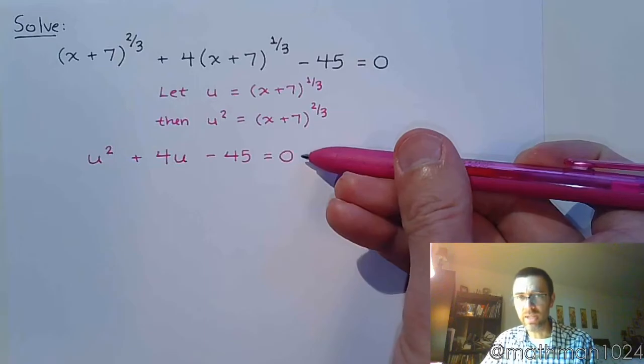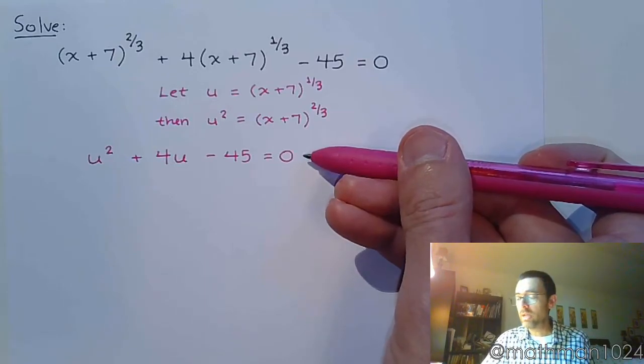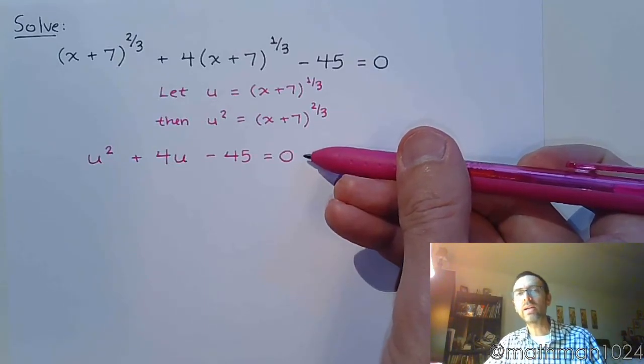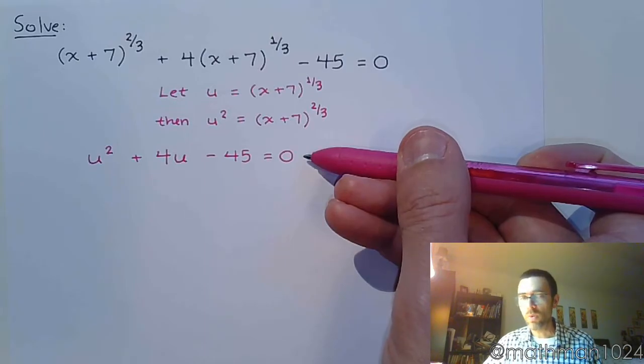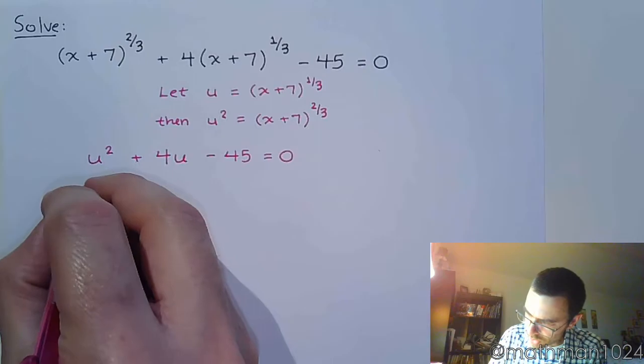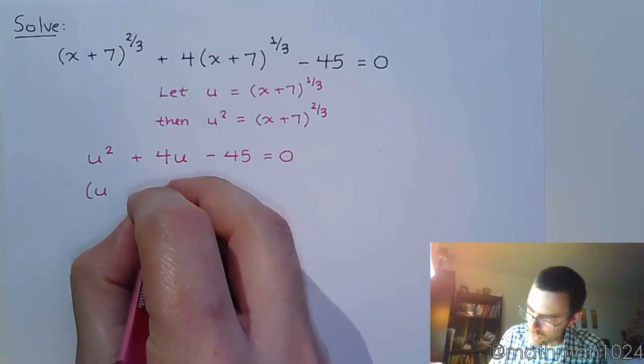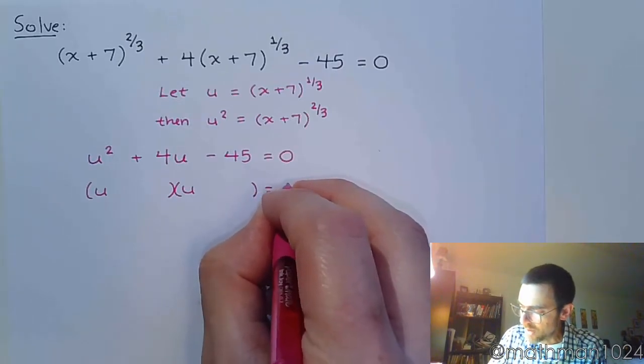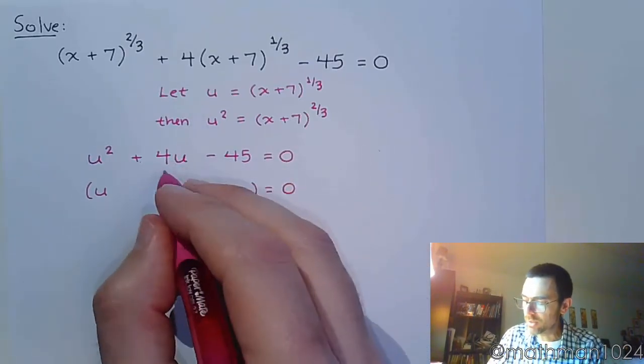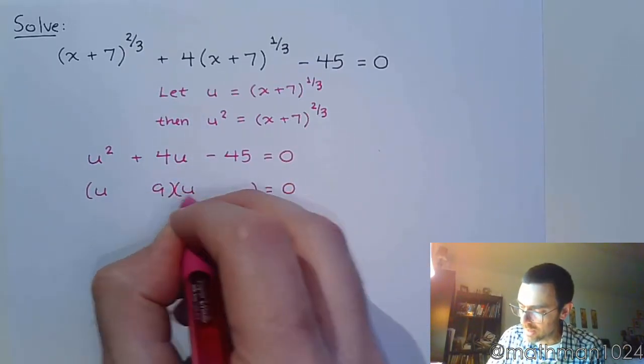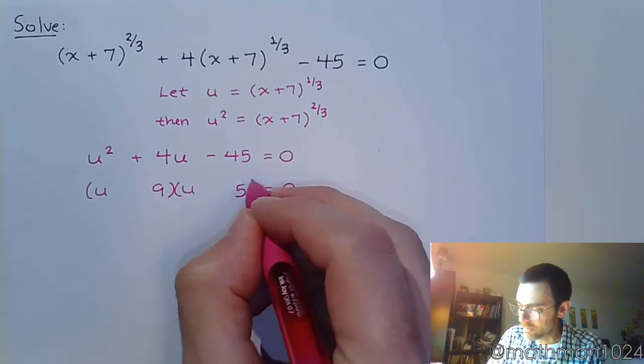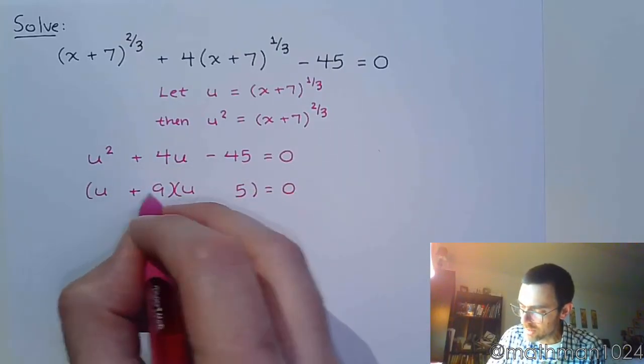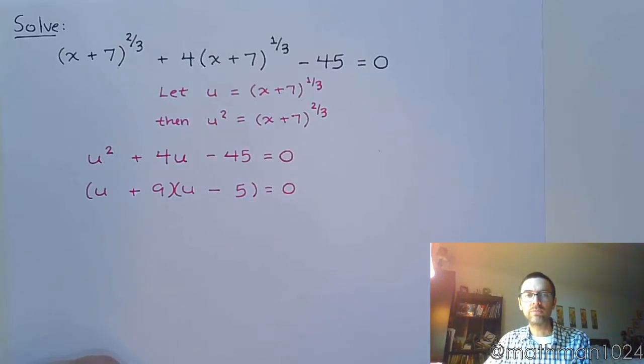And if I gave you this and I said hey, can you solve this for u? It really shouldn't be a problem because we recognize that this is a trinomial, it's quadratic, and it's a guy that factors, right? So we can break down the u squared to be u times u. And the factors of 45 that are going to subtract to 4 are 9 and 5. So that's plus 9 and minus 5.